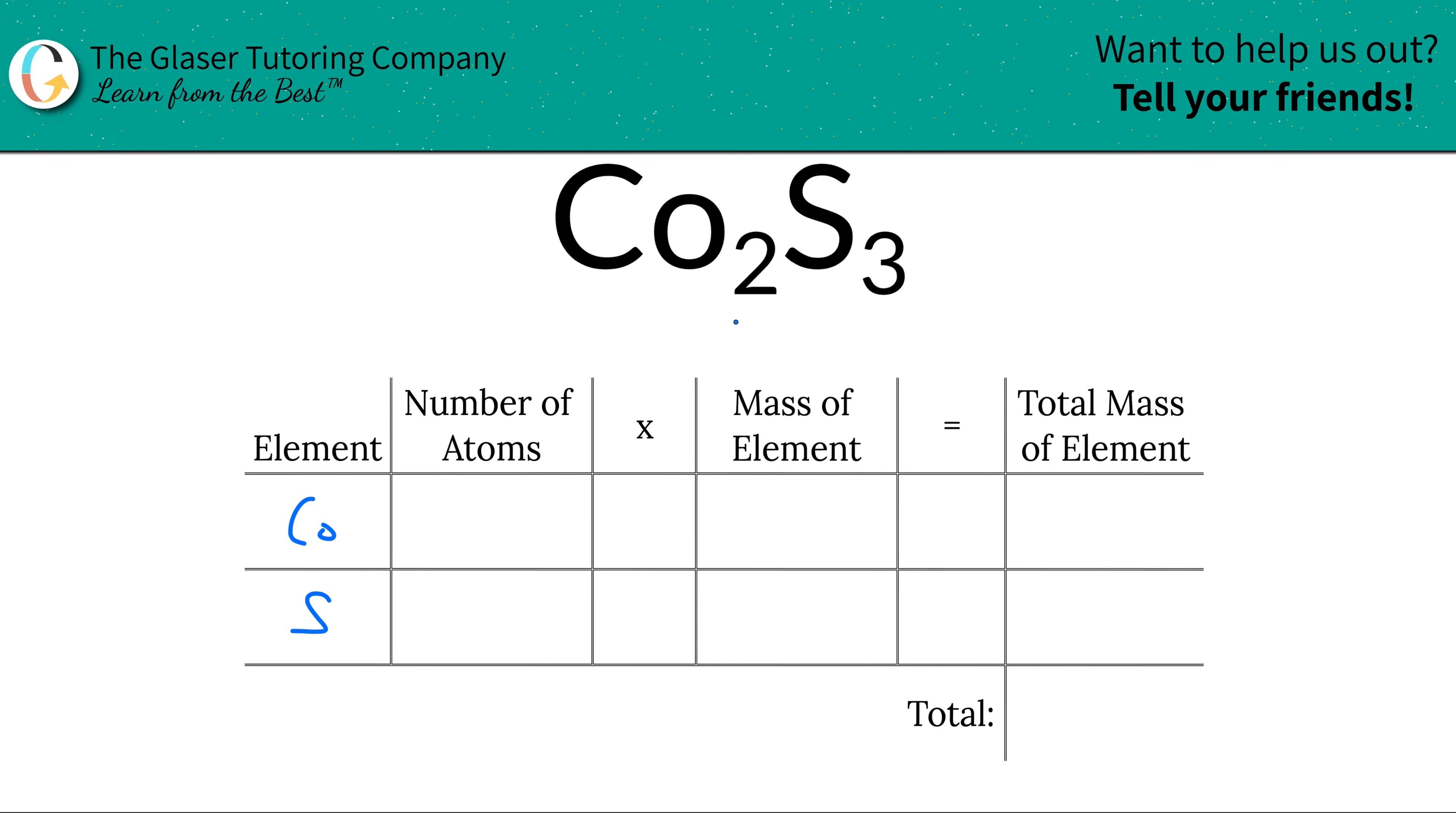Next is to take into consideration the number of atoms of each, and that's where these subscripts come into play. So for cobalt, there's a 2, and then for sulfur, there's a 3. So that means we have 2 atoms of cobalt and 3 atoms of sulfur.